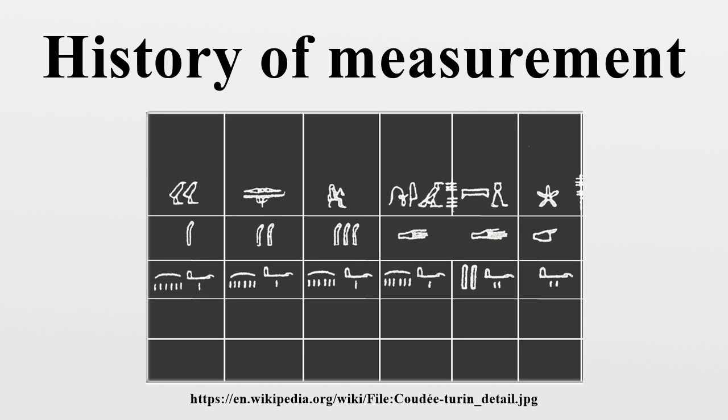The introduction of the yard as a unit of length came later, but its origin is not definitely known. Some believe the origin was the double cubit, others believe that it originated from cubic measure. Whatever its origin, the early yard was divided by the binary method into two, four, eight, and sixteen parts called the half yard, span, finger, and nail. The association of the yard with the girth, or circumference of a person's waist, or with the distance from the tip of the nose to the end of the thumb of King Henry I are probably standardizing actions, since several yards were in use in Britain.